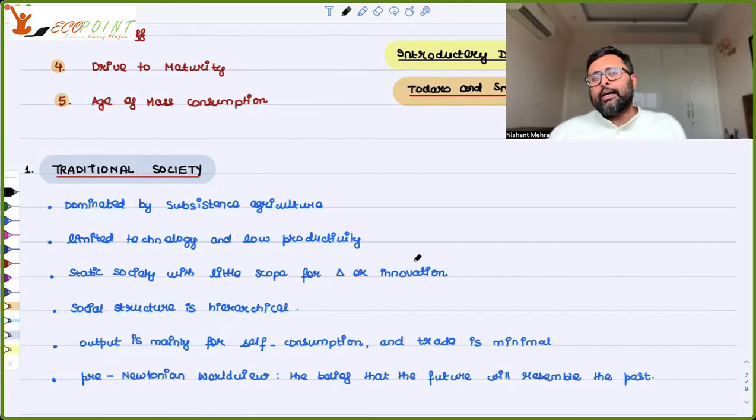In this kind of society, there is hardly any scope for innovation, any scope for change. Whatever I am doing, my next generation will also do the same thing. Even the later generations will also do the same thing. There is hardly any change in occupation, hardly any change in innovation. There is no social mobility also. Neither would anybody want to try any new technique of production because they're okay with whatever is happening. Social structure is also hierarchical.